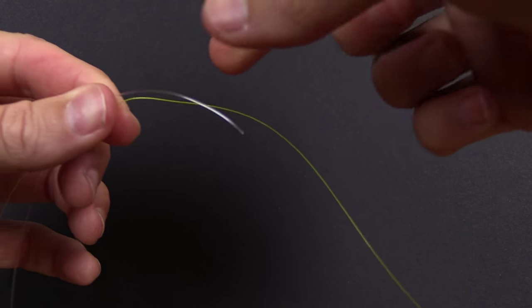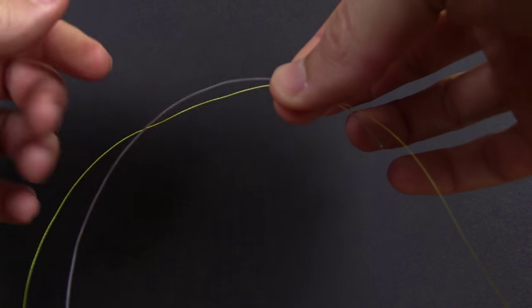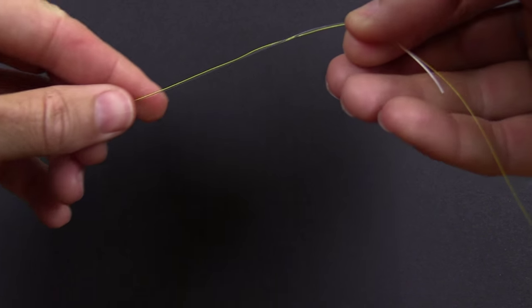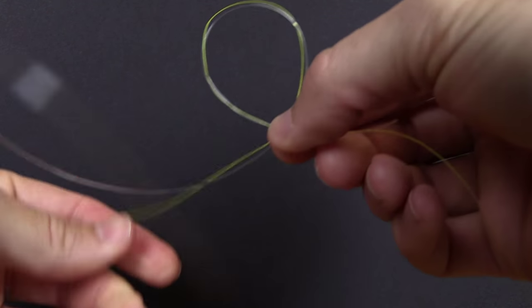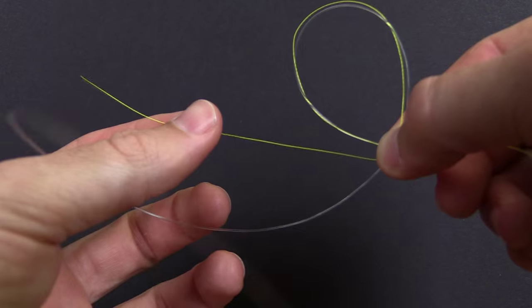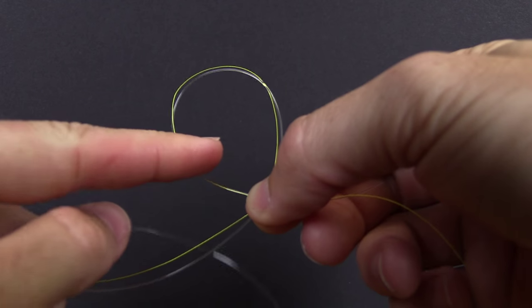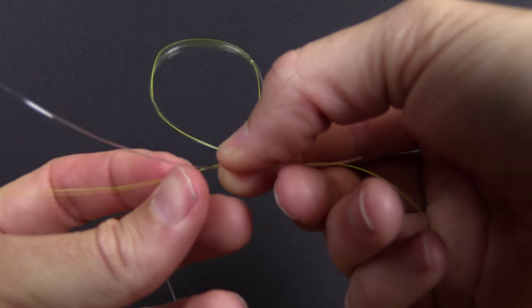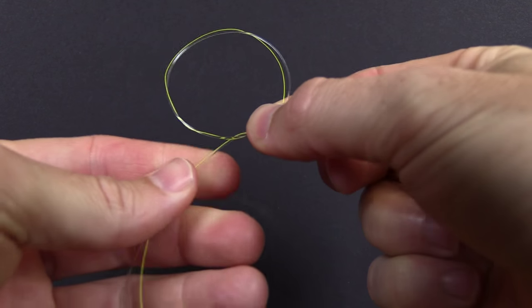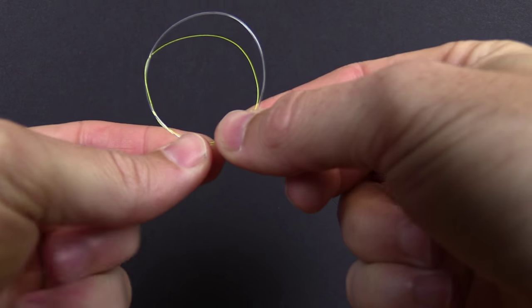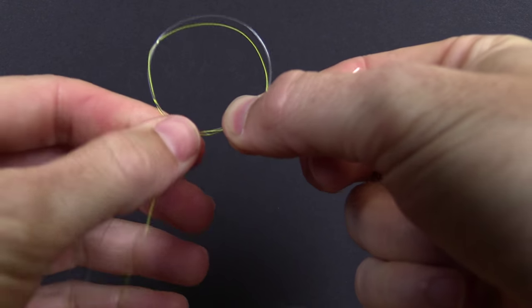I'm going to lock in the two lines together with my right fingers and then create a simple loop about the size of a silver dollar. On the right-hand side I have the tag end of the braid and the entire leader. Through this loop we're going to pass both strands six times. With braid you do it more than mono. With mono it's perfectly fine to do three to four. With braid I recommend six to eight.